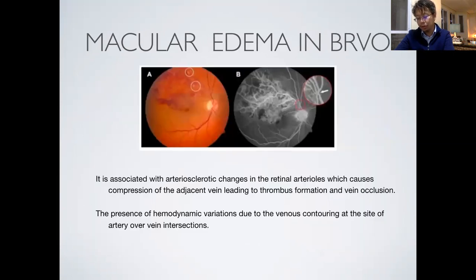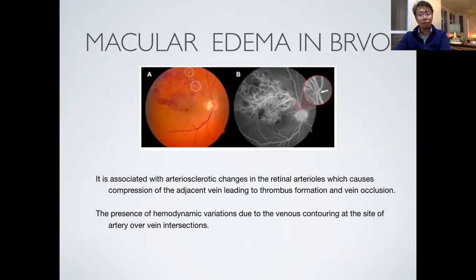Branch retinal vein occlusion is associated with arteriosclerotic changes in the retinal arterioles, which causes compression of the adjacent vein leading to thrombus formation and vein occlusion. There is also the presence of hemodynamic variations due to venous contouring at the site of artery-over-vein intersections.